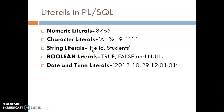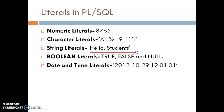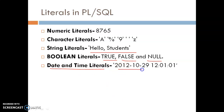Third, string literals contain more than one character in single quotation marks — for example, 'Hello Students'. Fourth, Boolean literals can be TRUE, FALSE, NULL, or NOT NULL. Fifth, date and time literals represent a date, and can include a time component as well — you can use date only or date with time.